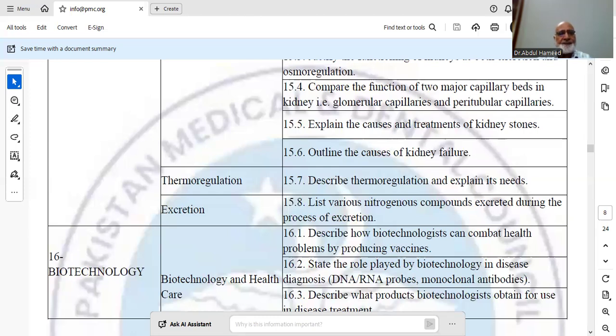The third step is the challenge test. We expose vaccinated animals to the real pathogen and check if they are protected or not. Then we evaluate whether the vaccine is safe, effective, and ready for human trials. If unsafe, we change it or discard it.